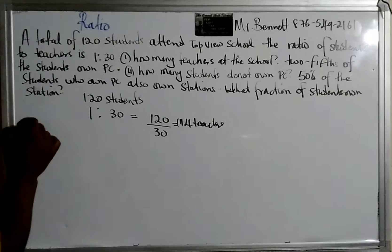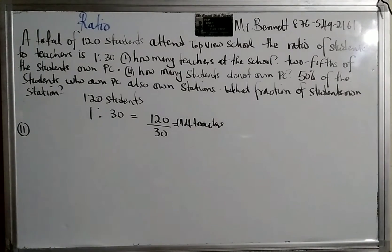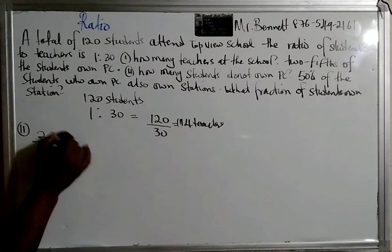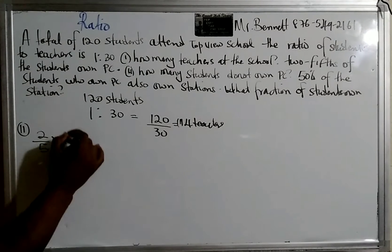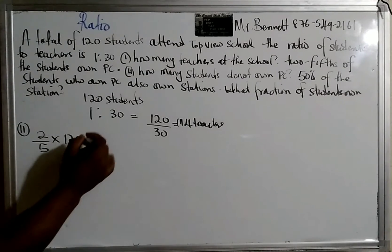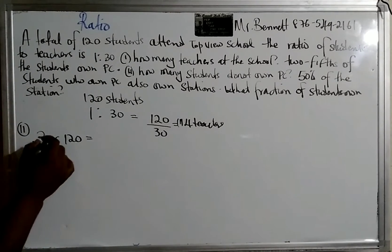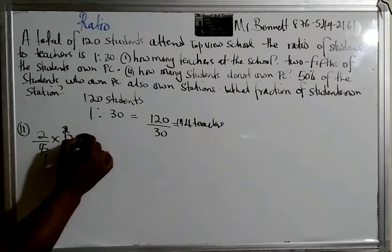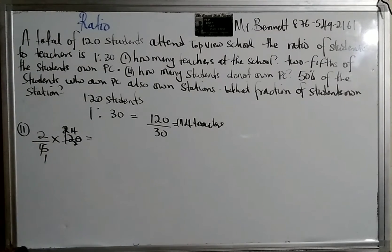So let us focus on number two. They give us an information. They said two-fifths of students own PC. So let us just find that two-fifths. Now the total student is 120, so we multiply by 120. So that's 24, so two times 24 gives us 48.